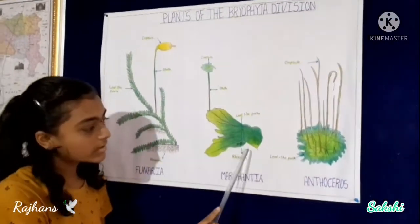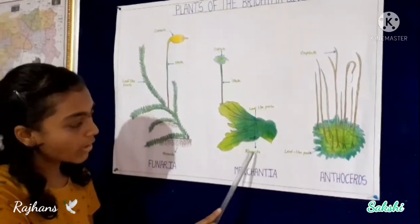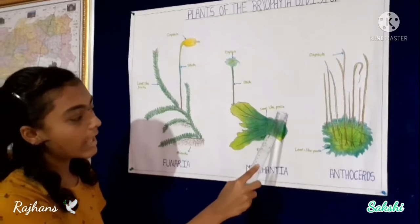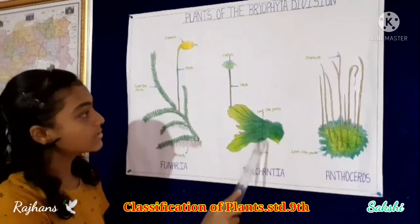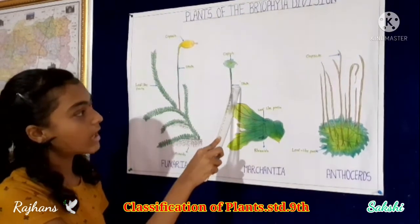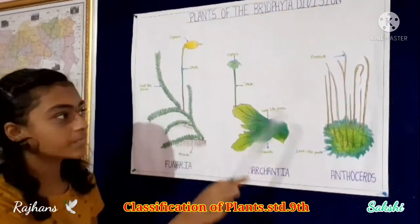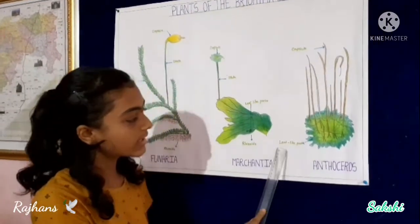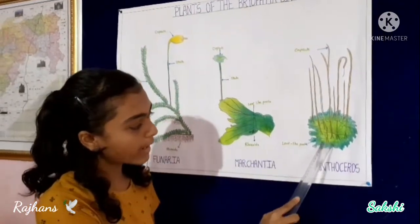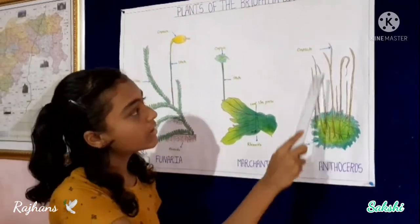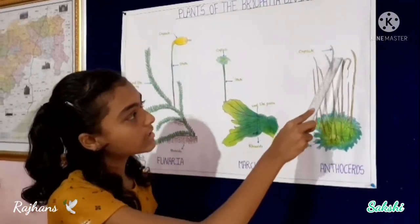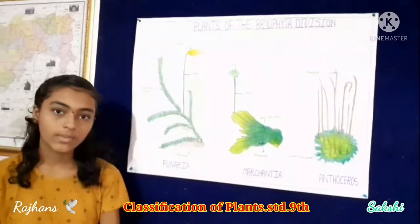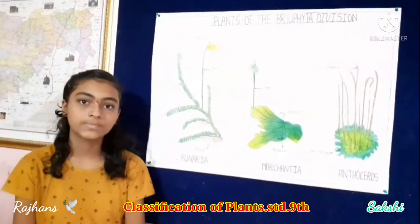Here, these are the rhizoids, the leaf-like parts, this is the stalk and this is the capsule. Here is Anthoceros — there are leaf-like parts. These are the capsules of Anthoceros.